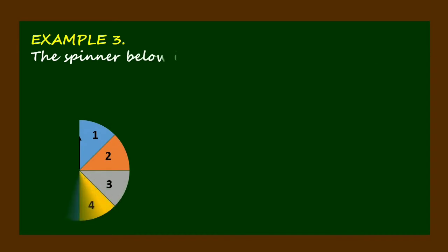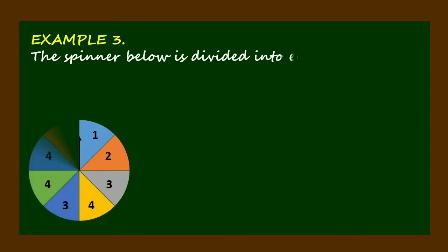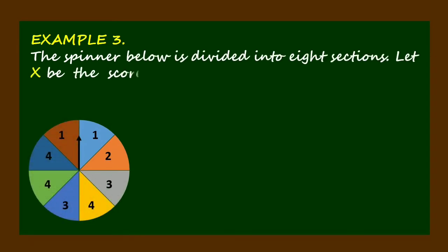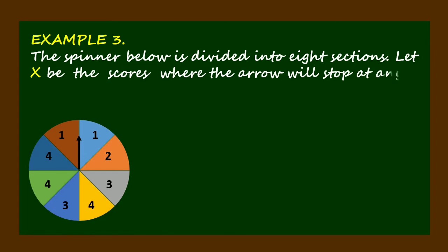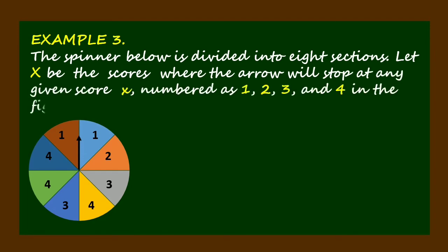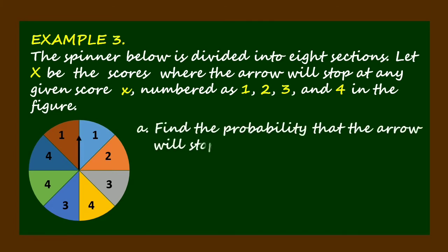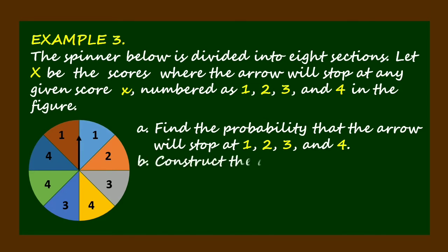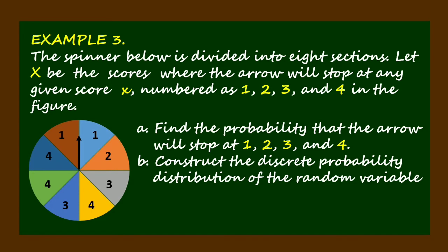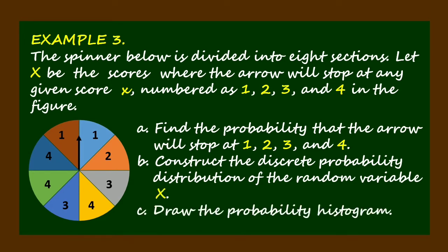Example 3. The spinner below is divided into 8 sections. Let x be the scores where the arrow will stop at any given score x, numbered as 1, 2, 3, and 4. Letter A: find the probability that the arrow will stop at 1, 2, 3, and 4. Letter B: construct the discrete probability distribution of the random variable x. Letter C: draw the probability histogram.